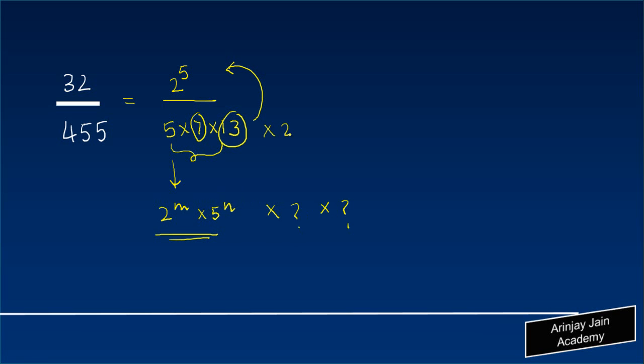I can always write it here as 2 to the power 0 and 5 to the power 1 maybe, but it is not only 2 to the power m into 5 to the power n. There are two other components that we have, which means that when we do a division for these two numbers what we will get is not going to be a terminating decimal expansion.